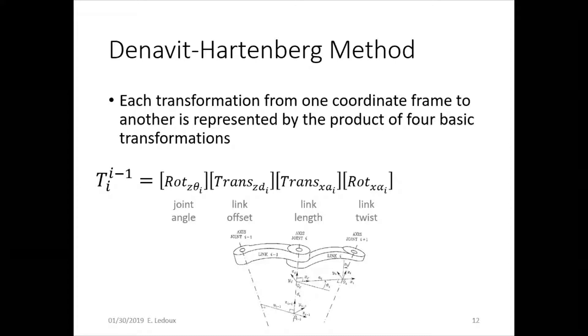Each transformation from one coordinate frame to the next is represented by the product of four basic transformations. This is a rotation around the joint, then a translation in that direction, then another translation perpendicular to that to get to the next frame, and then finally twisting around the axis between the two frames.